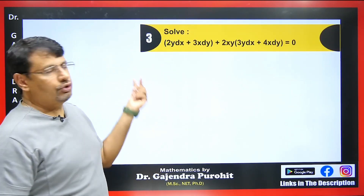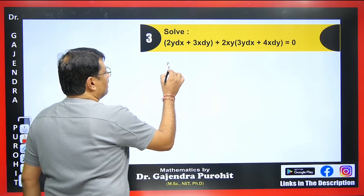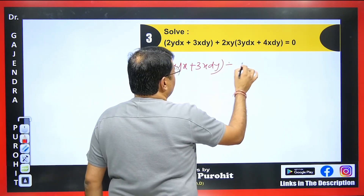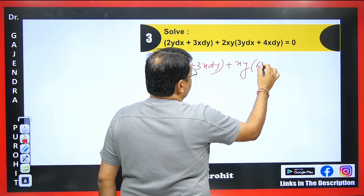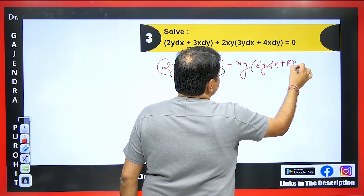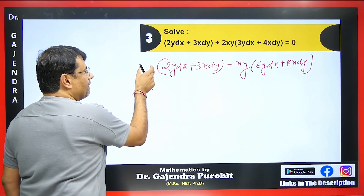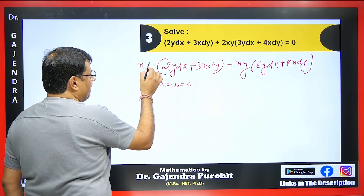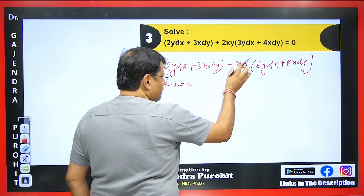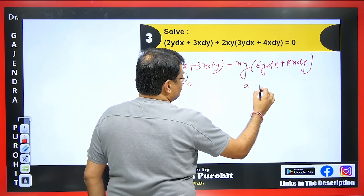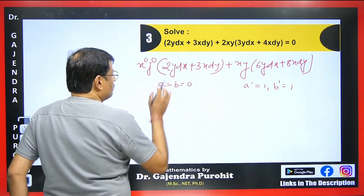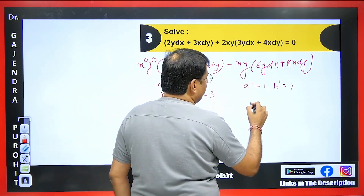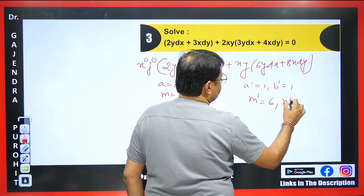Looking at our example question, comparing it to this general form, we can write it as 2y dx + 3x dy and further in the equation multiplying through gives us 6y dx + 8x dy. In this equation the values of a and b are absent, indicating they are 0 — we write them as x^0 and y^0. Here a' and b' each equal 1. The coefficient m equals 2, n equals 3, m' equals 6, and n' equals 8.